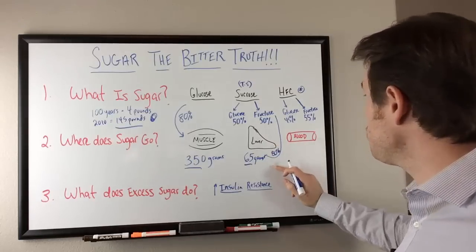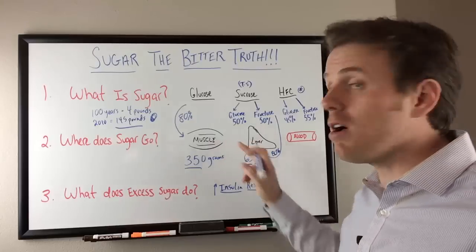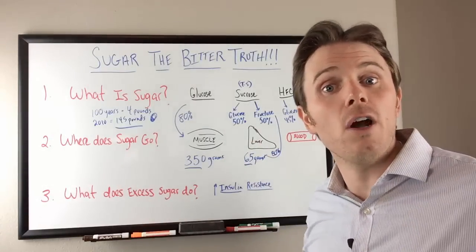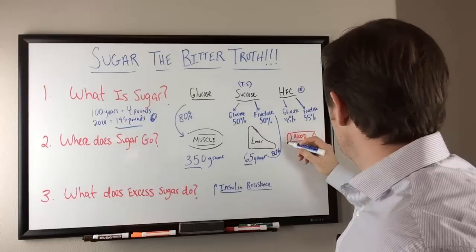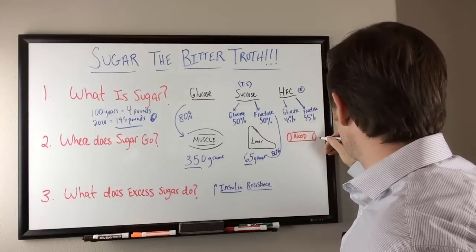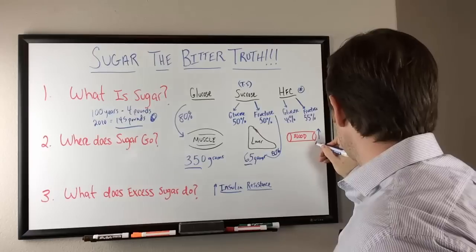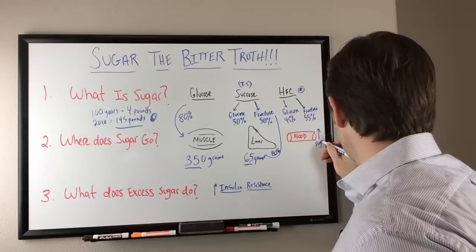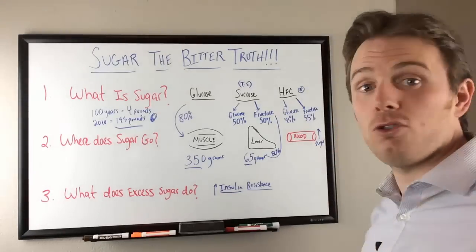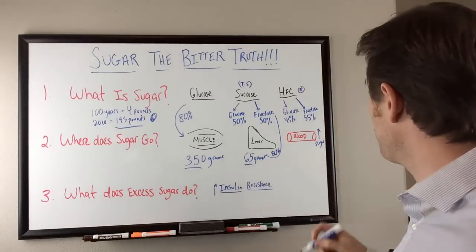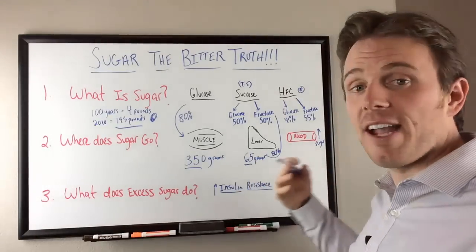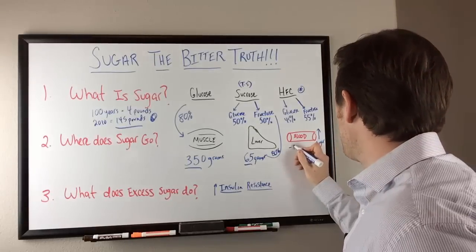Not to mention when that liver is full and the muscle is full, guess where that sugar then goes? That sugar then eventually goes to the blood. So then we have increased sugar in the blood. Because we only have three major tissues that can go in, the muscle, the liver, or the blood. And then eventually here, if it gets too high, we'll eventually have something like diabetes.